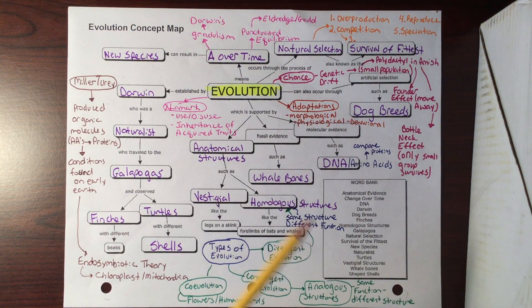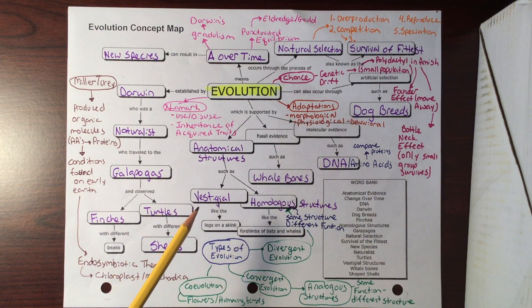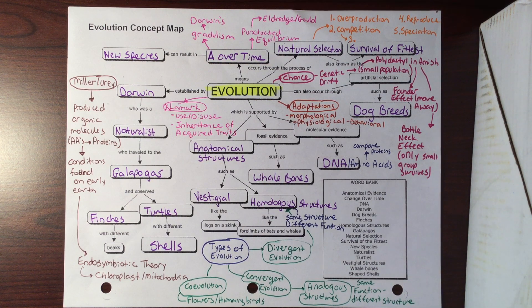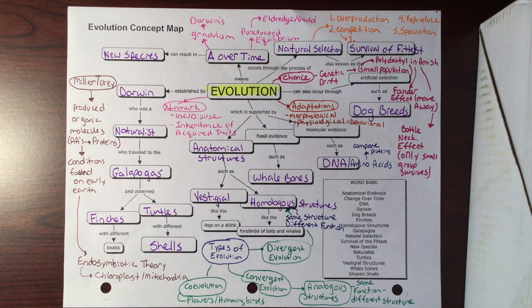We can talk about molecular evidence such as DNA. The closer the DNA is, the closer the amino acids are. We can actually compare proteins between them. The more closely related organisms are, the more closely related their amino acid sequences are, which we know comes from their DNA. We can look at anatomical structures such as vestigial structures - legs on a skink.